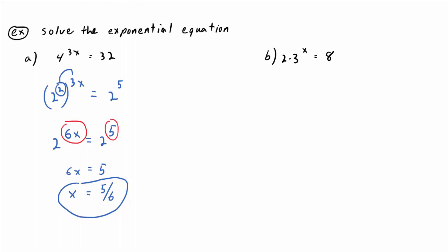The exponential function part of it is 3 to the x, and there's a factor of 2 in front of that. And it's going to be necessary to isolate, whenever possible, the exponential function part.